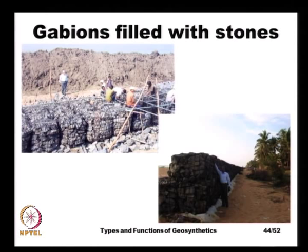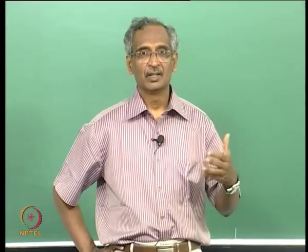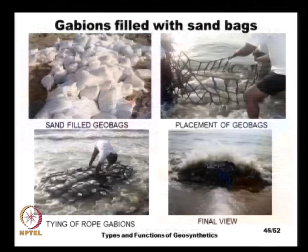Gabions are baskets made of either steel wire meshes or rope net meshes. In this case, rope net meshes are used. Gabions are packed with stones or filled with geotextile bags filled with sand, to act as sea walls, groin structures, or breakwaters. Here we see an example of a sea wall built using rope net gabions filled with stones.